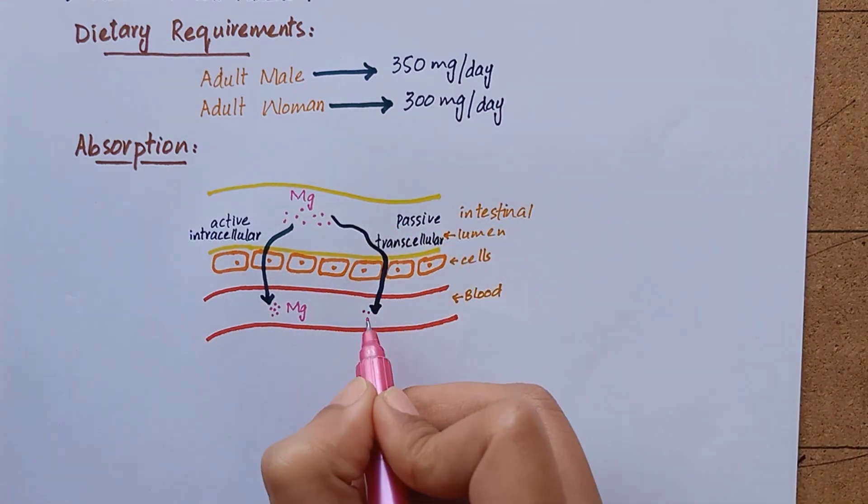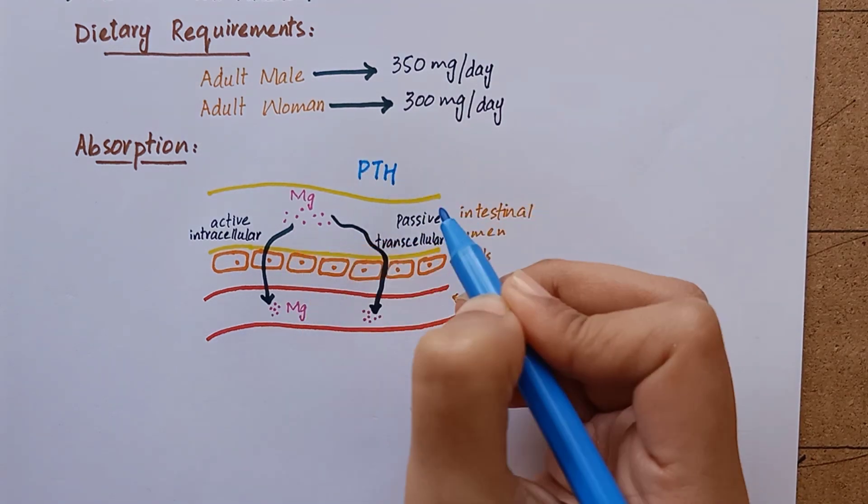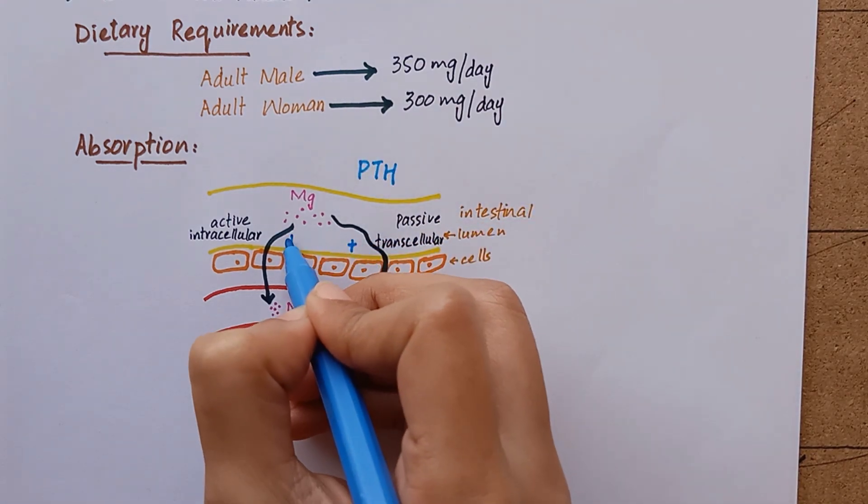Parathyroid hormone promotes magnesium absorption. Normal serum concentration of magnesium is 2 to 3 milligrams per deciliter.